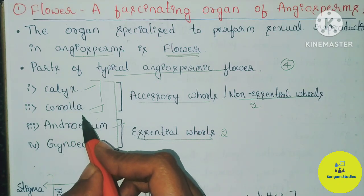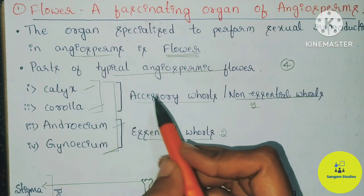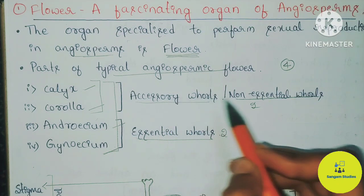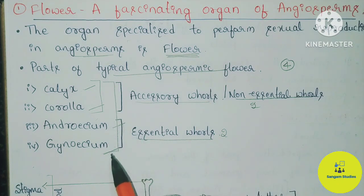Calyx and Corolla are non-essential whorls and are not directly involved in sexual reproduction. Androecium and Gynoecium are the essential whorls and are the main parts responsible for sexual reproduction in flowers.